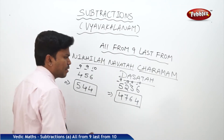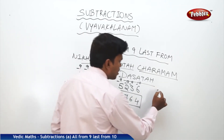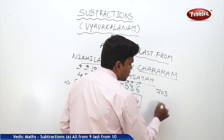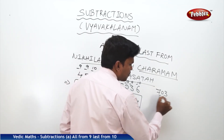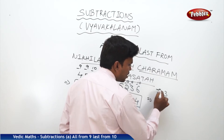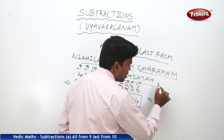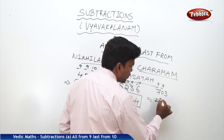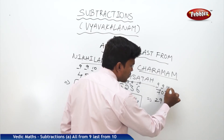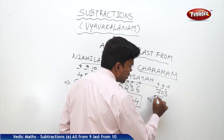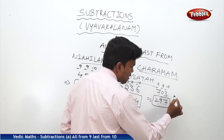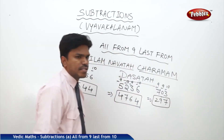One more example: 703. Nine minus seven is two, nine minus zero is nine, and last from ten: ten minus three is seven. So the answer is 297.